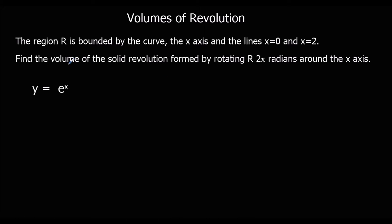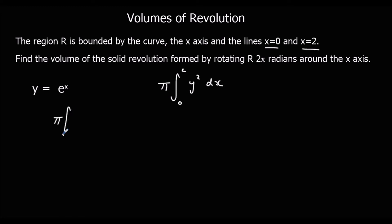Here's another question. The volume of the solid formed is going to be π times the integral of y squared with respect to x, between the two limits we're given — so between 2 and 0. In this case y is e to the power of x, so we've got π times the integral between 2 and 0 of e to the power of x, all squared. And we can simplify: e to the power of x squared is e to the power of 2x.